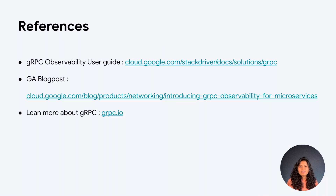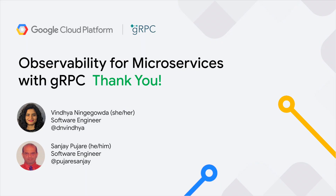gRPC.io is a great starting point to get more information about gRPC. Now that you know how to configure and instrument your applications, we have a follow-up video titled 'Observability Visualization for gRPC Microservices in GCP' — a great presentation to learn how to visualize and analyze gRPC observability data. If you're looking for an easy-to-use and reliable way to keep your microservices or distributed applications healthy and happy, then gRPC observability is a perfect solution for you. Thank you again for your interest in gRPC observability. We hope you find it a useful tool for your work.